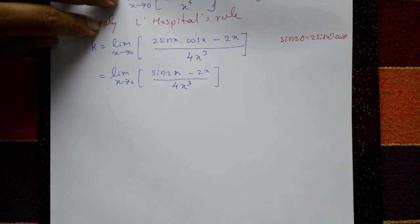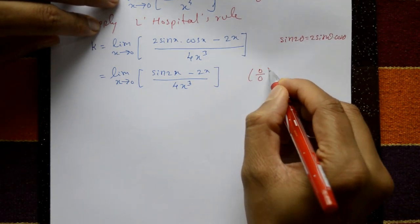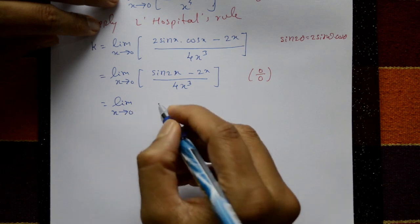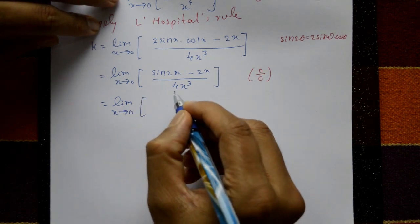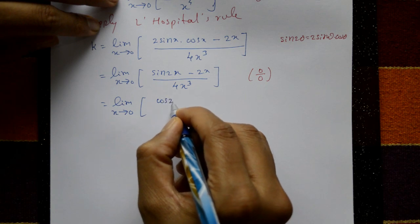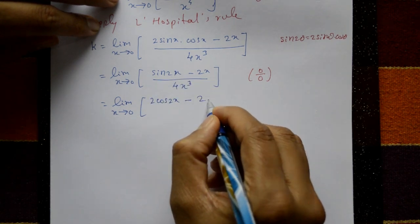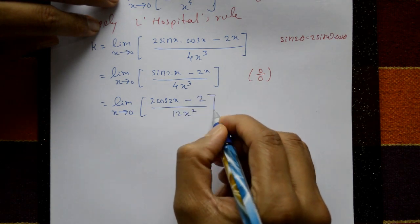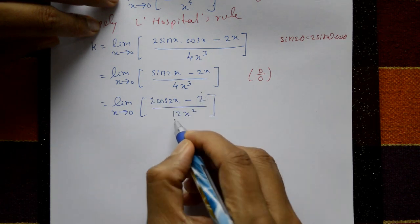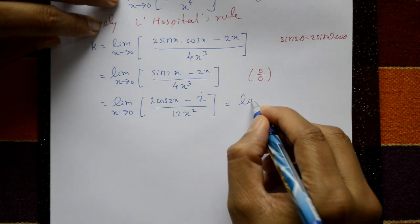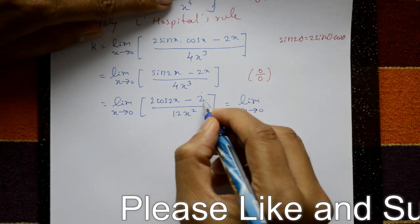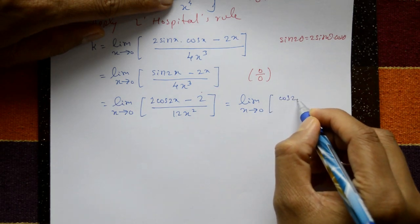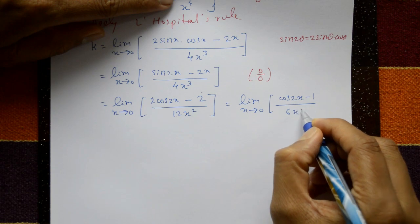Again 0/0, so apply L'Hôpital's rule again. Differentiate: cos 2x times 2 minus 2 in numerator, denominator 12x². Taking 2 common: 2(cos 2x minus 1) / 12x², which simplifies to (cos 2x minus 1) / 6x².